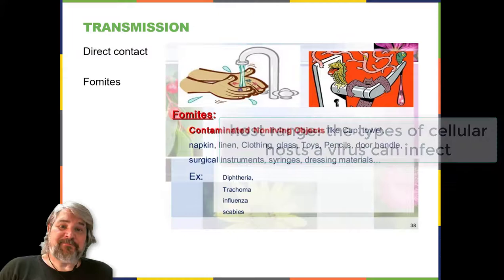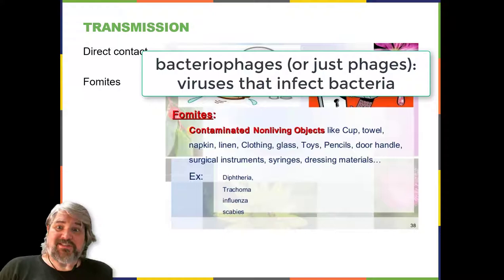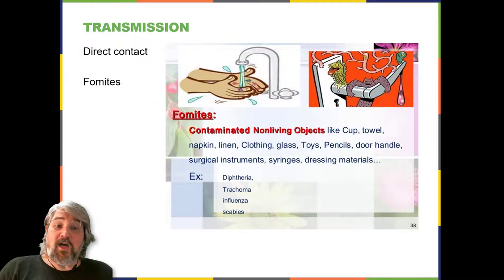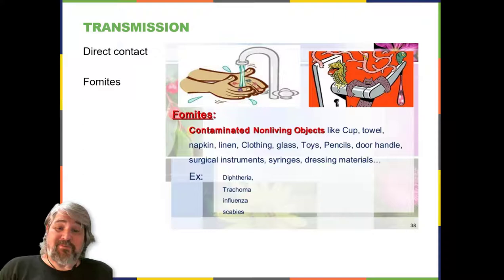The viruses that infect bacteria are called bacteriophages, or simply phages. The word phage comes from the Greek word for devour. Other viruses are identified by their host group, such as animal or plant viruses. Once a cell is infected, the effect of the virus can vary: viruses may cause abnormal growth of the cell or cell death, alter the cell's genome, or cause little noticeable effect in the cell.